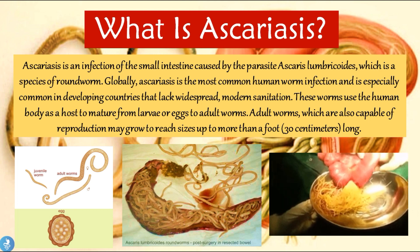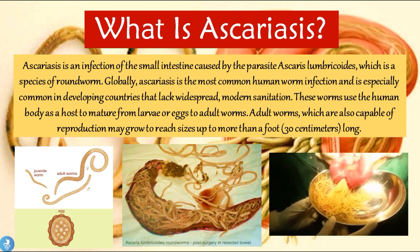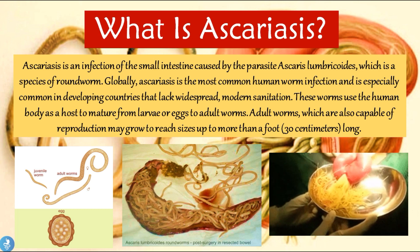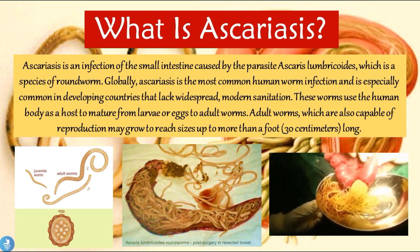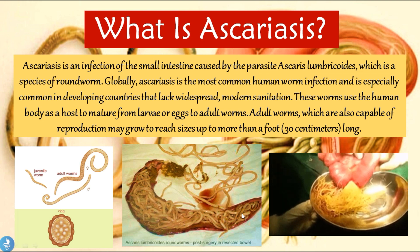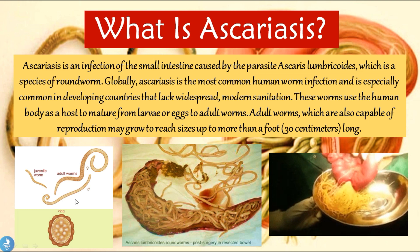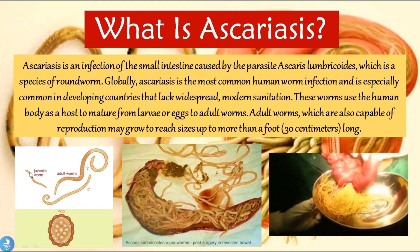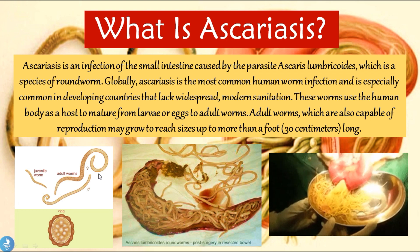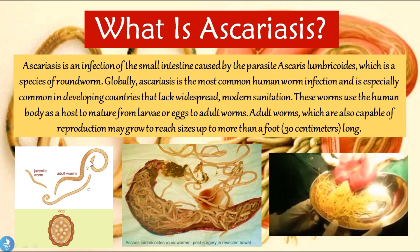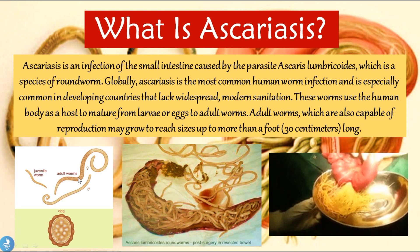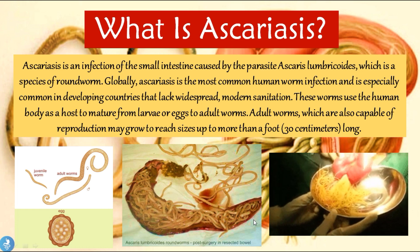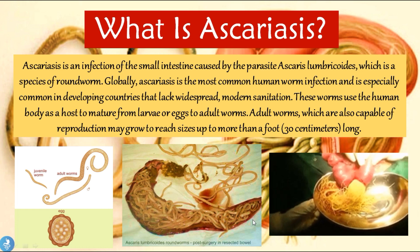So ascariasis is a roundworm infection that's very common in the world, especially in rural or poorer countries. It's an infestation of the small intestine by parasitic worms called Ascaris lumbricoides, which can reach quite large sizes — some up to 30 centimeters long. In the images shown, we can see what the parasitic egg looks like, the juvenile worm, the female parasite, and the male parasite. The females are usually thicker and much longer than the males.